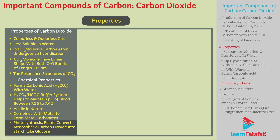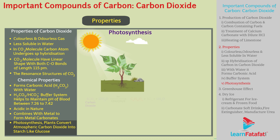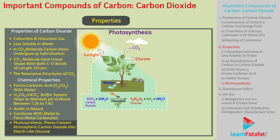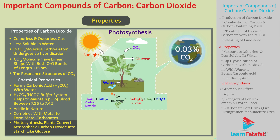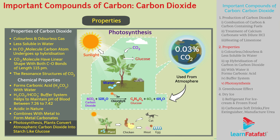With the help of photosynthesis, plants convert atmospheric carbon dioxide into starch-like glucose. You will be surprised to know that 0.03% of carbon dioxide by volume is removed from the atmosphere through photosynthesis. The food so produced is used by all living organisms directly or indirectly.